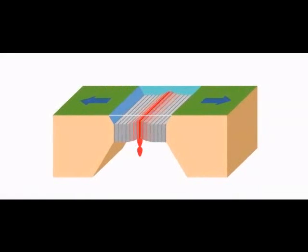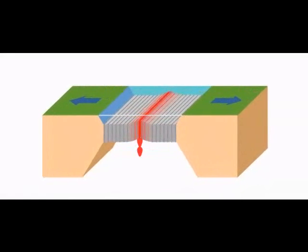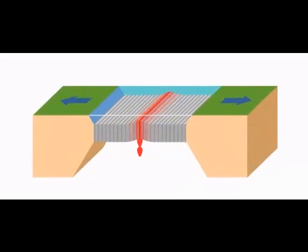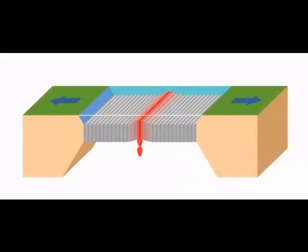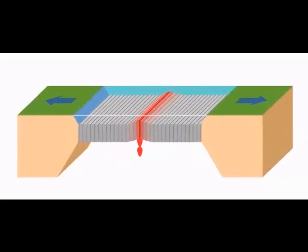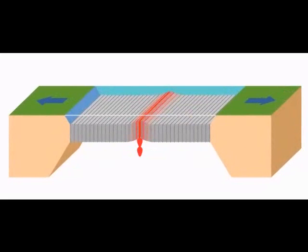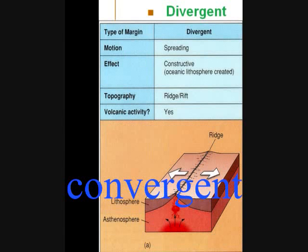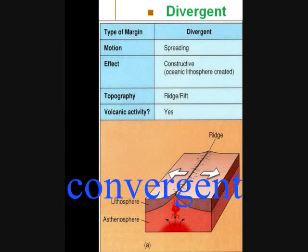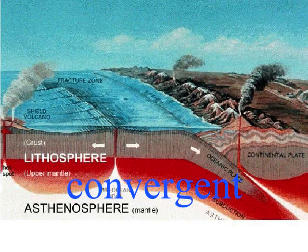The first type of plate movement is divergent. In this animation, you can see how the two plates are moving apart in opposite directions. In this movement, ridges are created by volcanic activity that spews from the gaps when these plates move apart, creating rifts or holes. It is here where new crust is created.